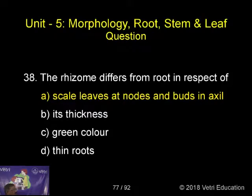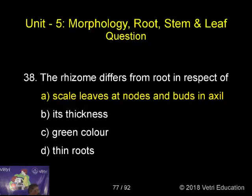The rhizome differs from root in respect of: its thickness, green color, thin color, thin roots. The correct answer is A: scale leaves at nodes and buds in axil.